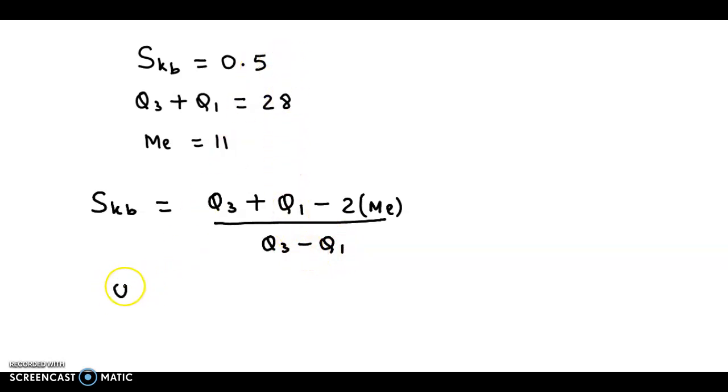Now Skb value is 0.5, Q3 plus Q1, this is 28, so this becomes 28, minus 2 times median. Median value is 11, divided by Q3 minus Q1.